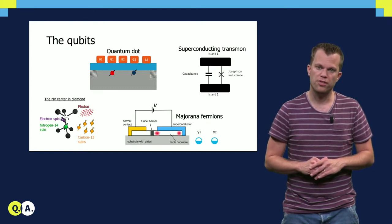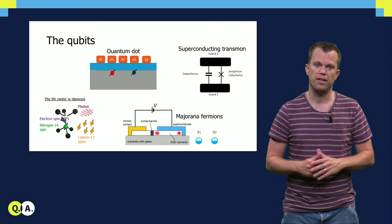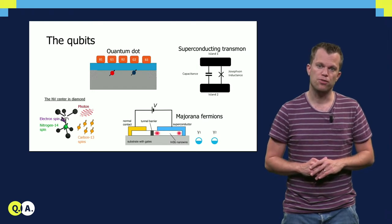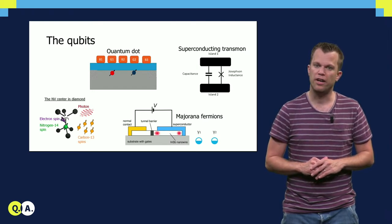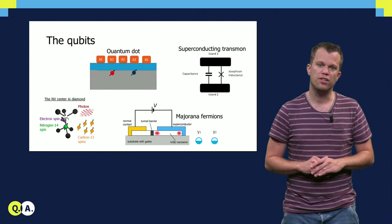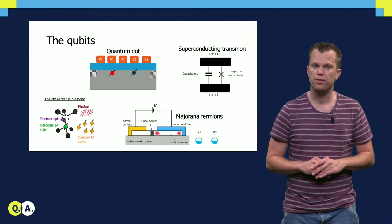Spin qubits in quantum dots also exhibit very long coherence times, but they also offer the advantage of being man-made. This allows to realize qubits at a predefined location, which is clearly beneficial for scaling up the number of qubits.